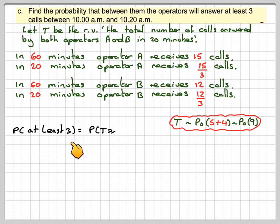We want the probability at least 3, which is the probability that T is greater or equal to 3, which is going to be 1 minus the probability that X is less than or equal to 2 if you're going to use CDF.